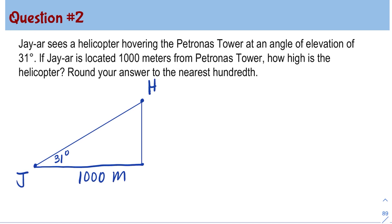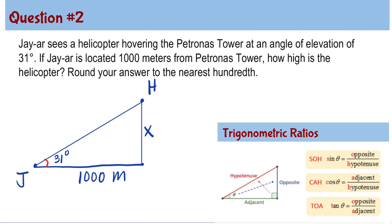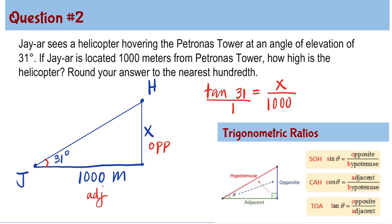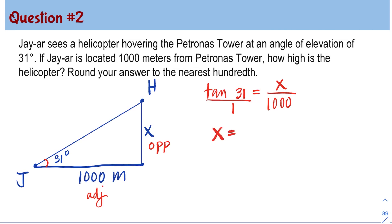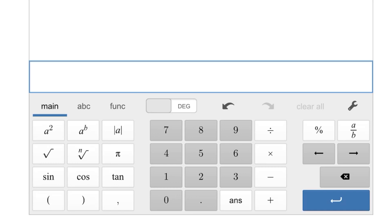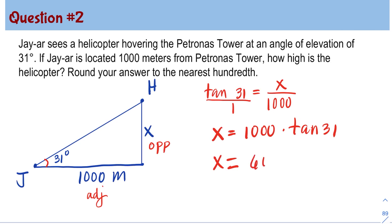The question is, how high is the helicopter? To solve for X, we need to use a trigonometric ratio. In reference to the 31 degree angle, X is the opposite and 1,000 meters is the adjacent. So for question number 2, we're using the tangent ratio: tangent 31 degrees is equal to opposite X divided by adjacent 1,000 meters. We cross multiply and X is equal to 1,000 times tangent 31. Using our calculator, the value of X is 600.86 meters.